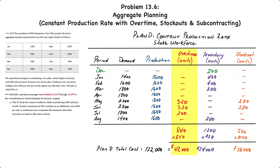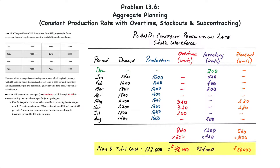Determining our total costs: we have a total of 840 units produced in overtime at $50 per unit for a total of $42,000. Inventory totals 1,200 units over the eight-month period at $20 per unit for a total of $24,000. Over the eight-month period, only 560 units stocked out times $100 is $56,000. When we add those all up, the total cost of Plan D is $122,000.